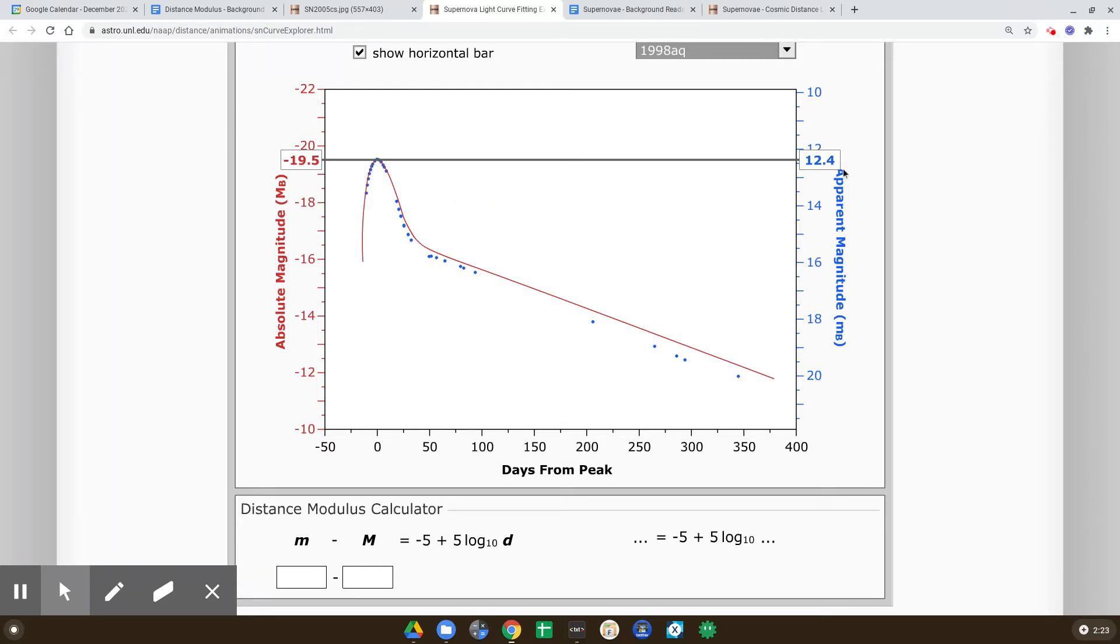My apparent magnitude is 12.4. Then I'm going to subtract the negative 19.5 to find my absolute magnitude. And then of course, from that distance modulus, the distance of this galaxy could be found.